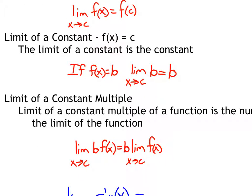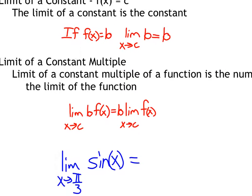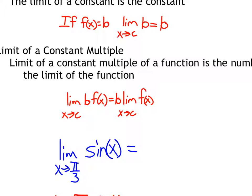Another very helpful theorem is the constant multiple rule. The limit of a constant multiple of a function is the multiple times the limit of the function. So the limit as x approaches c of b·f(x) equals b times the limit as x approaches c of f(x) — we can multiply the limit by b rather than multiplying the function by b first.